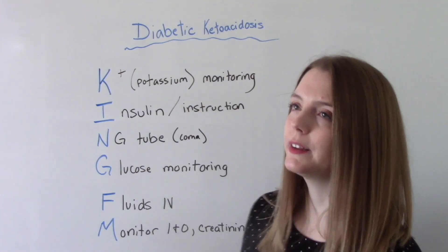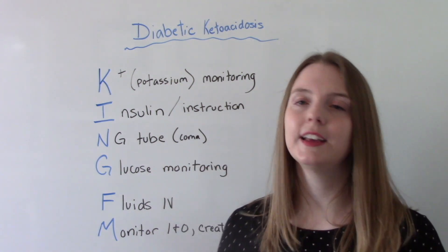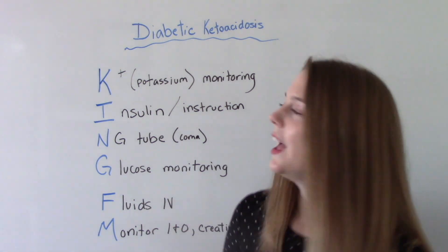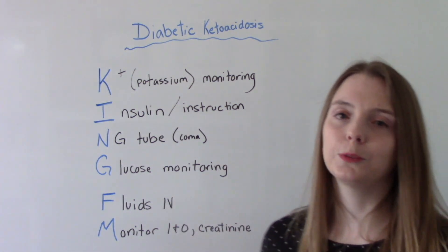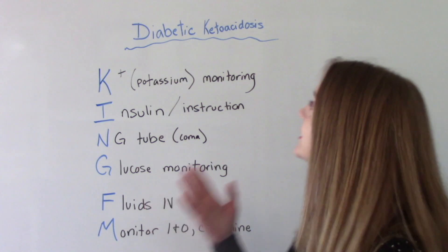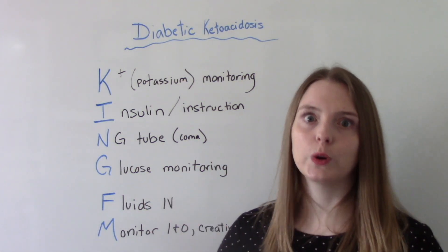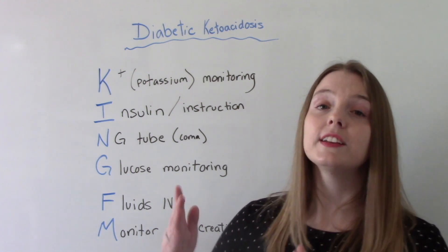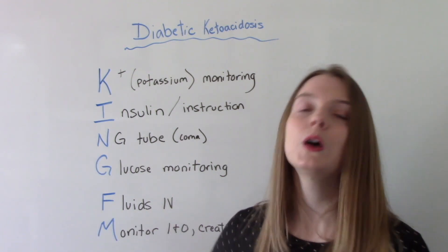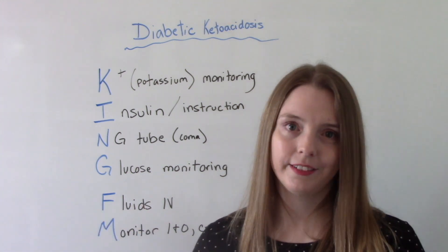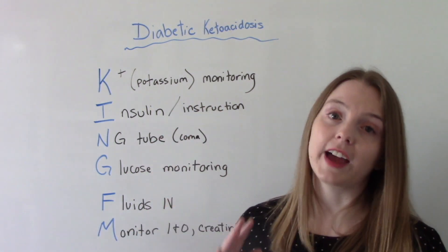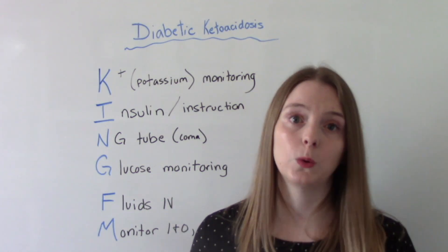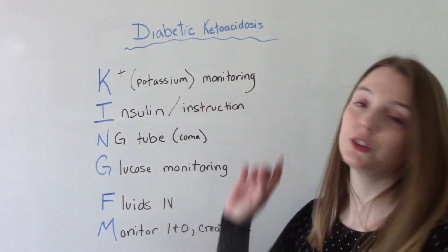A way you can remember the treatment for diabetic ketoacidosis is King FM. So the K stands for potassium, and what we need to do is monitor their potassium levels. In diabetic ketoacidosis, they can have very low potassium levels, which can be very dangerous. This is another reason why when we do our diagnoses, we're going to do an ECG, because having low potassium will affect our heart rhythm. So monitoring potassium levels is essential.